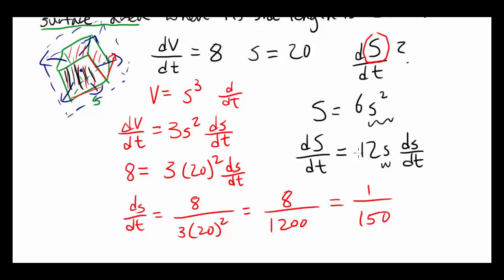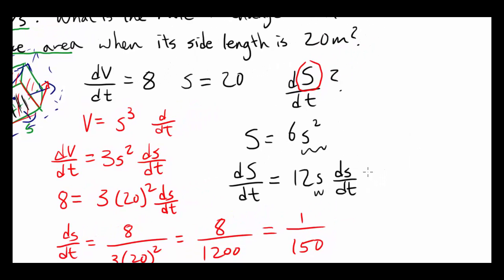So we can find the rate of change of surface area with respect to time. It's going to be 12 times S, 20, times dS/dt, 1 over 150. Also known as, these zeros cancel out, 12 and 15, you have 24 over 15, also known as 8 over 5.